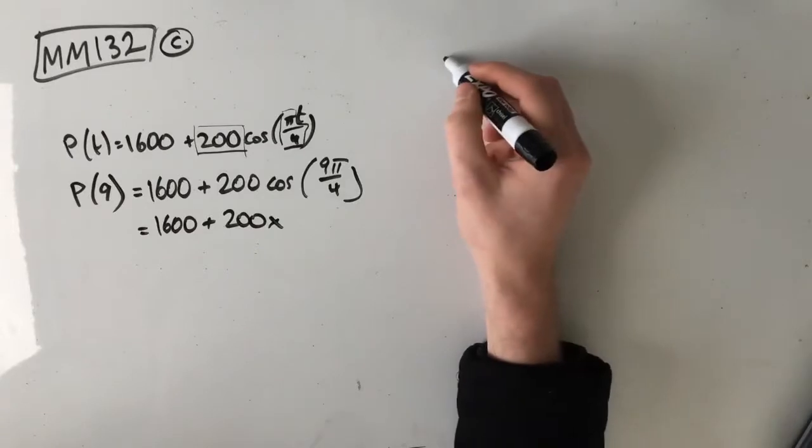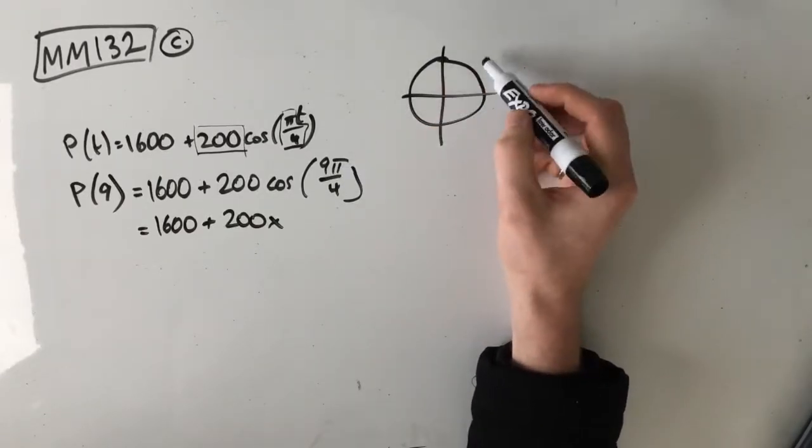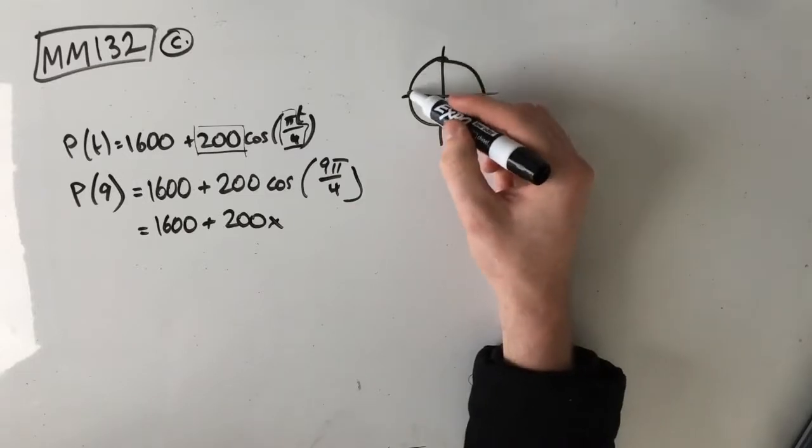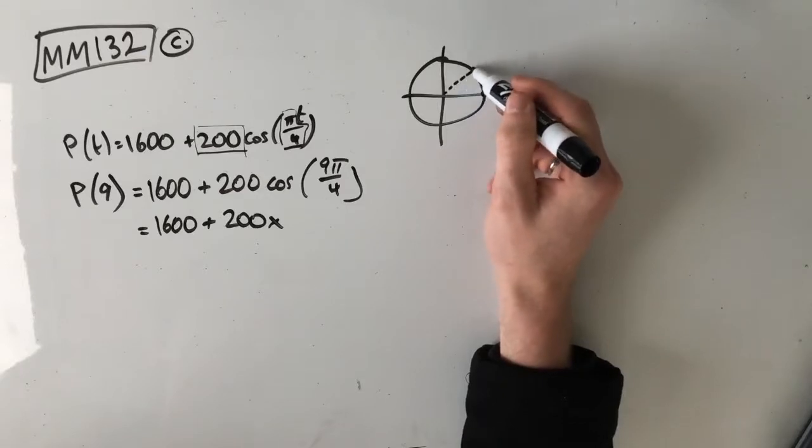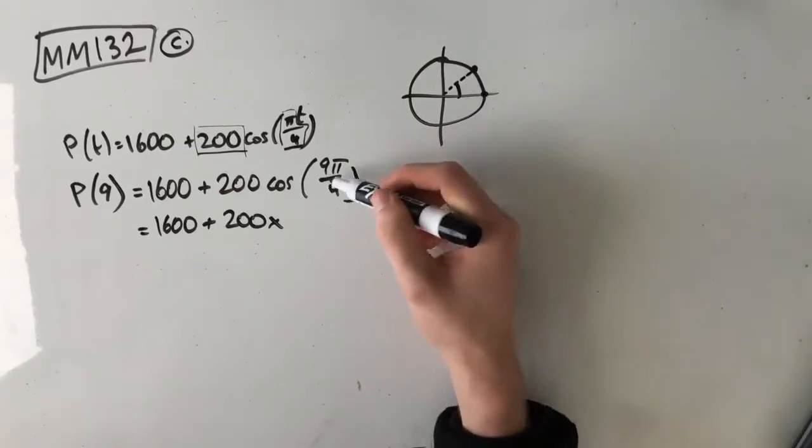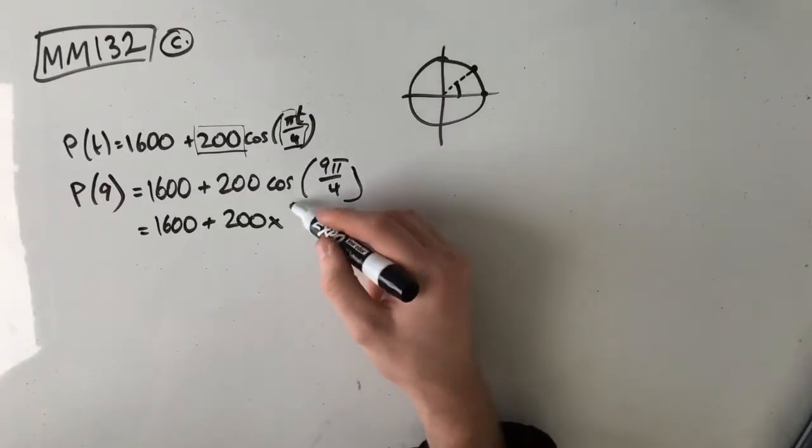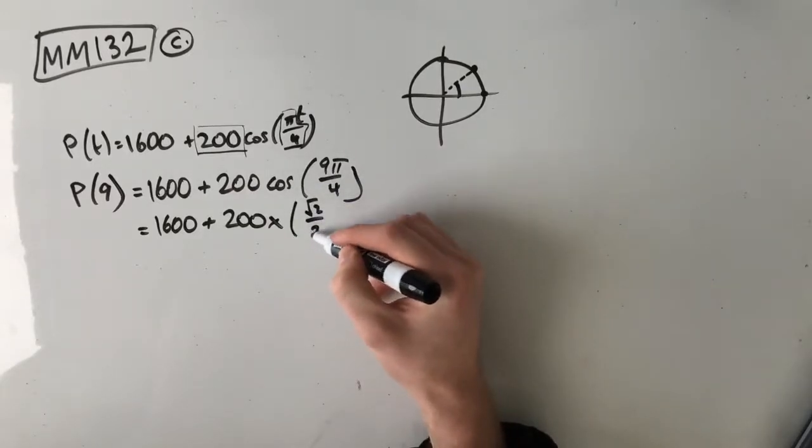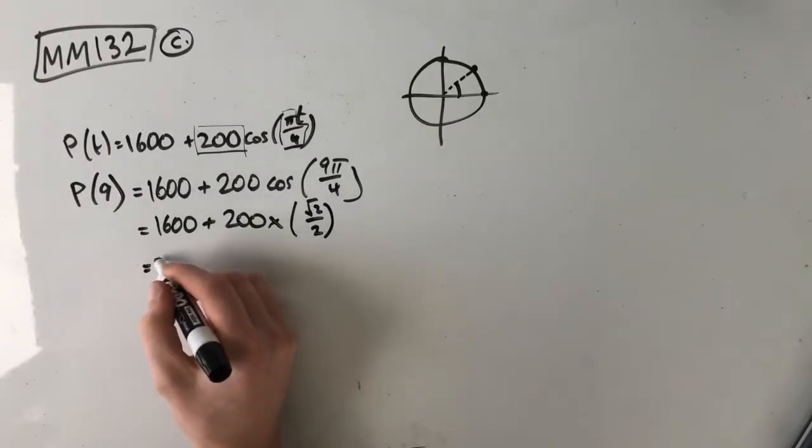Let's just very quickly check this out on the unit circle. 9π on 4 is the same as 8π on 4, which is just 2π, so just here, plus π on 4, which is here. So cos of 9π on 4 is the same as cos of π on 4, which is root 2 on 2. If you're not too familiar with this, just make sure you go back and check this out.